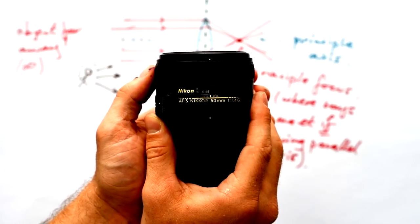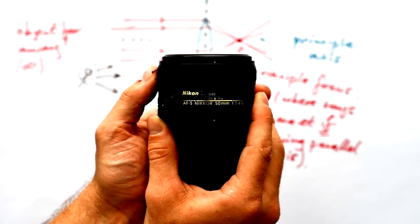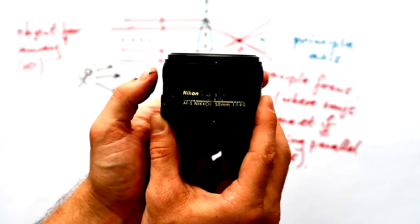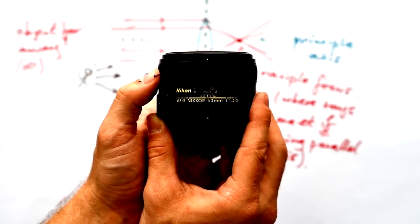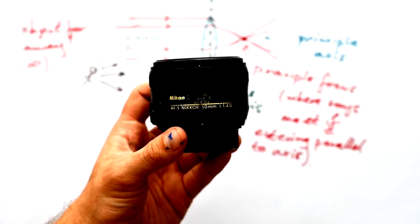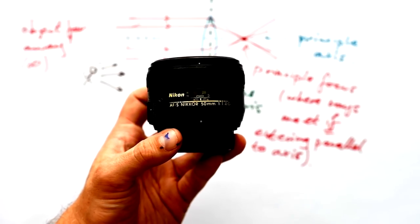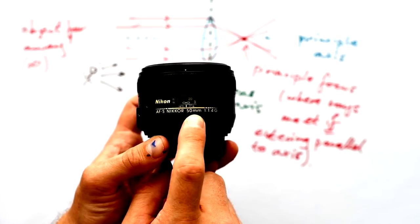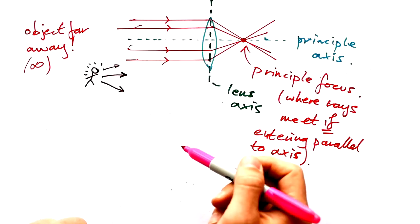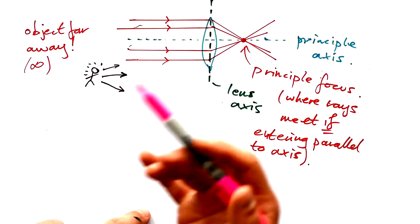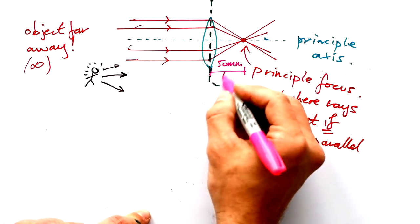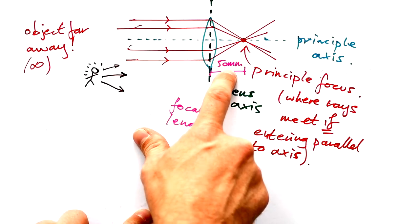On this focus ring it tells you how close the object you're focused on is. I'm at 0.45 meters, then 0.5, 0.6, 0.7, 1, 1.5, 3, and then straight to infinity. When my lens is at infinity, it's set up to take rays from something infinitely far away. This lens says 50 millimeters — this is what we call the focal length of a lens. It means that when the lens accepts parallel light rays from something infinitely far away, like the Sun, this distance to the principal focus is 50 millimeters. You can buy lenses with all kinds of different focal lengths. We can also put the principal focus on the other side of the lens.